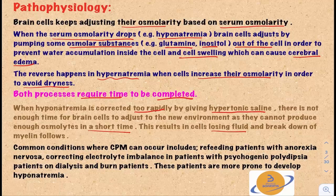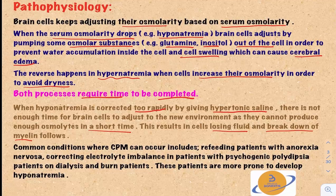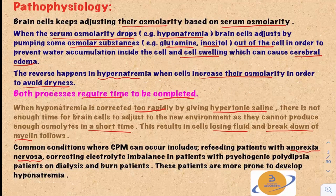This will result in cells losing fluid, drying out, and eventually this leads to the breakdown of myelin. Common conditions where central pontine myelinolysis can occur include refeeding patients with anorexia nervosa — an eating disorder characterized by massive weight loss and electrolyte imbalance — correcting electrolyte imbalance in patients with psychogenic polydipsia (patients who drink too much water because of a psychological problem), patients on dialysis, and burn patients.